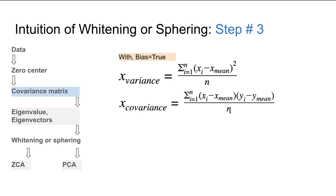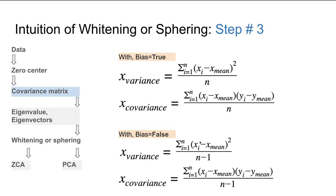If bias is equal to False, the only difference is we divide by n-1 instead of n. Note that in NumPy the default is bias=False, so you need to set the values according to whether bias=True or bias=False as needed.